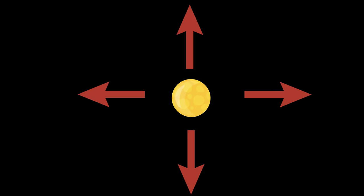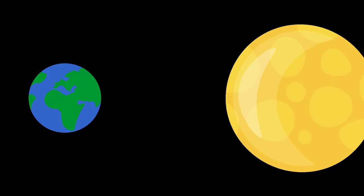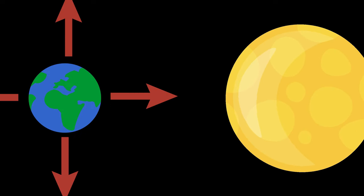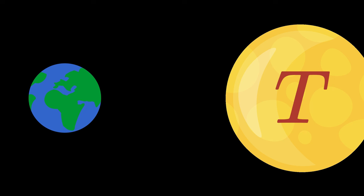Every body that has a temperature radiates energy. How much energy does our sun radiate and how much of it reaches us on Earth? How much energy does the Earth actually radiate into space? And what is the surface temperature of our sun? These and similar questions can be answered by the Stefan-Boltzmann law.